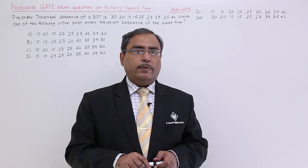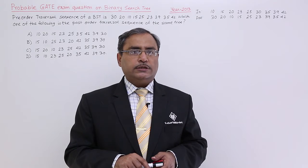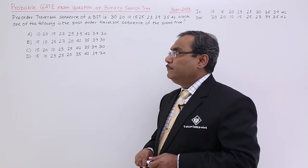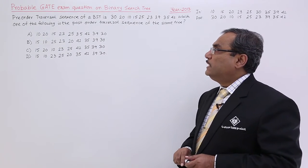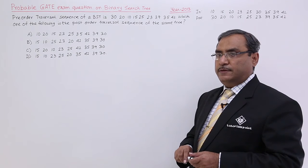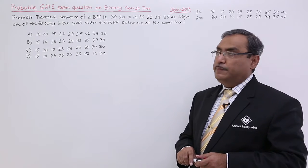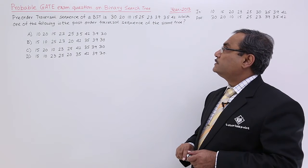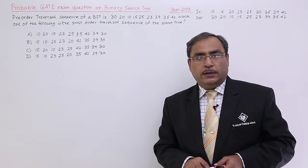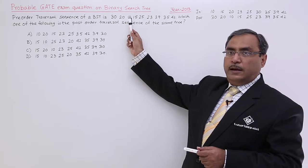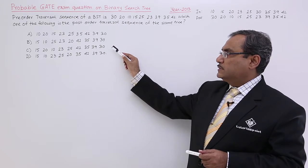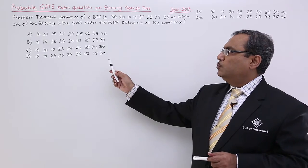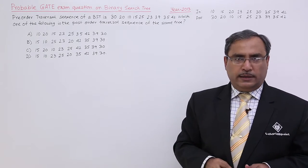We are solving another great problem which came in the year 2013 on binary search tree. The problem is like this one: a pre-order traversal sequence of a BST is given. Which one of the following is the post-order traversal sequence of the same tree? Four options are there and we shall have to tell which post-order traversal is the right one.